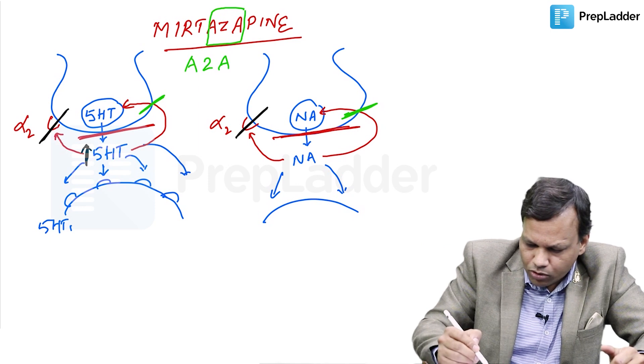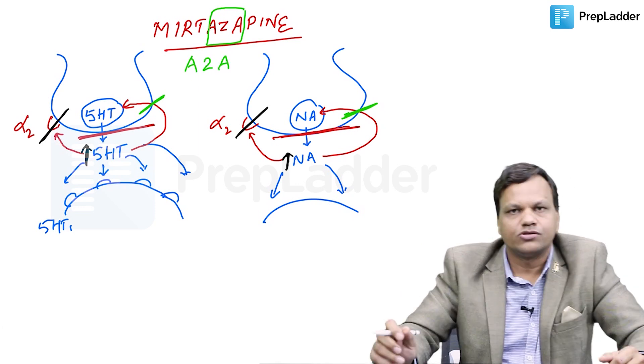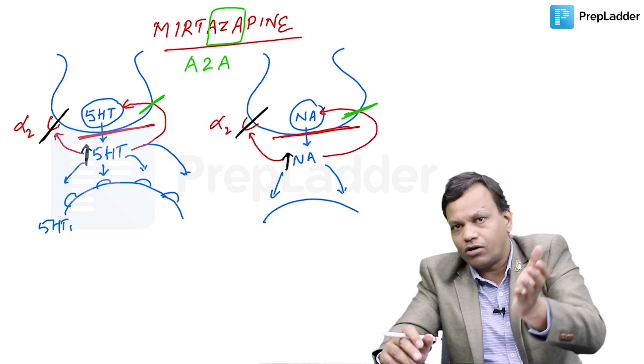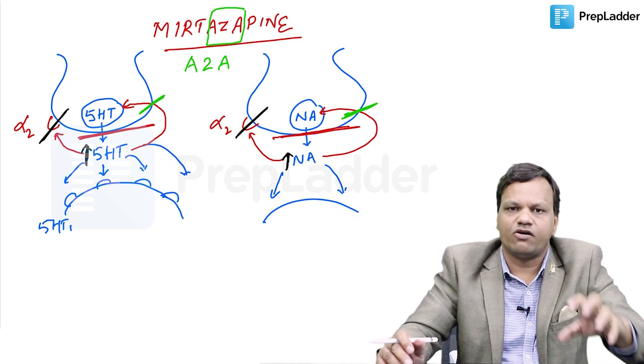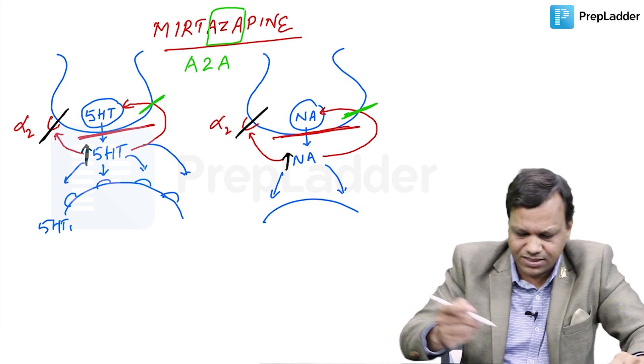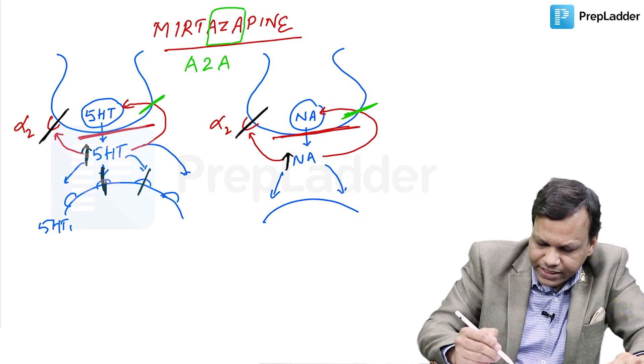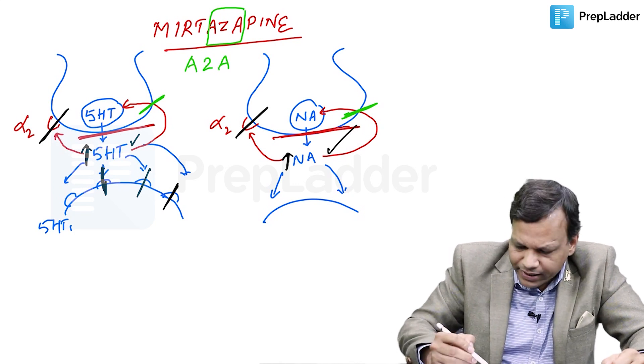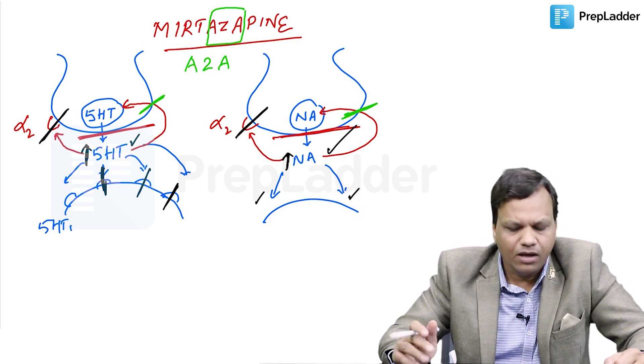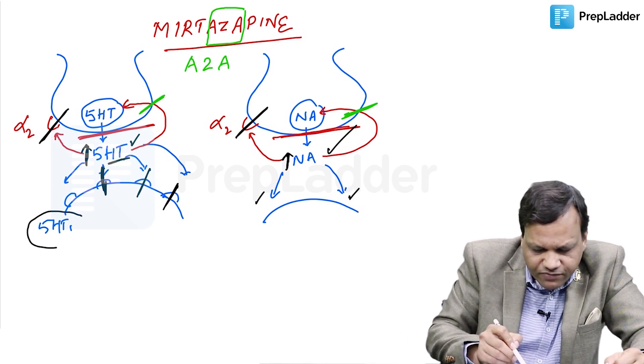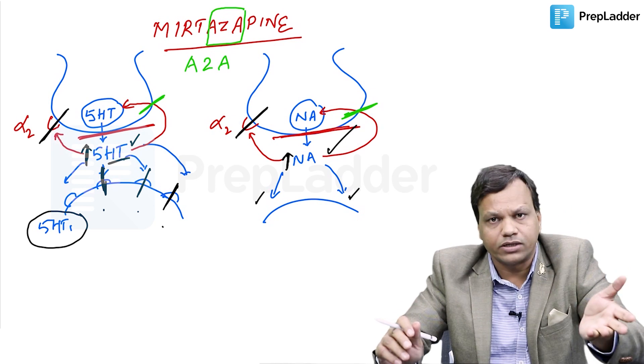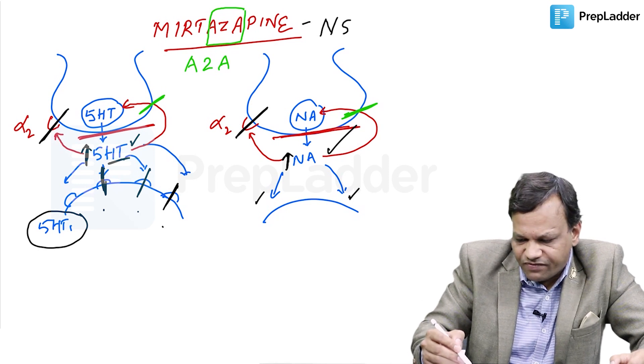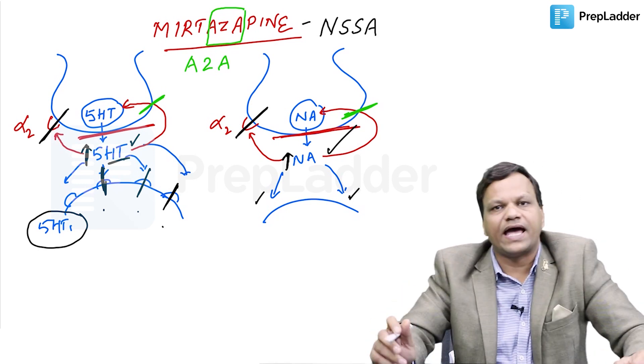More serotonin is released, more noradrenaline is released. This function is just like the other antidepressant drugs. That means, increase serotonin and noradrenaline. But additional difference of Mirtazapine from other drugs is, Mirtazapine also blocks 5-HT-2, 3 and 4 receptors. That means, Mirtazapine increases serotonin, increases noradrenaline. Noradrenaline can work on all the receptors available. But serotonin can selectively work on 5-HT-1 only because 2, 3 and 4 are blocked. That is why Mirtazapine is given a name called as noradrenaline and specific serotonin antidepressant, NSSA.